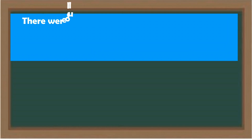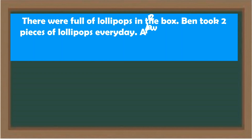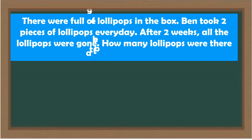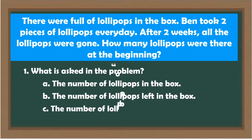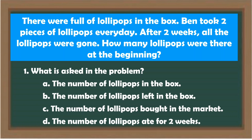Read the problem, then answer the questions that follow. There were lollipops full in the box. Ben took 2 pieces every day. After 2 weeks, all the lollipops were gone. How many lollipops were there at the beginning? Question 1 — What is asked? A. The number of lollipops in the box. B. The number of lollipops left. C. The number of lollipops bought in the market. D. The number of lollipops eaten for 2 weeks.